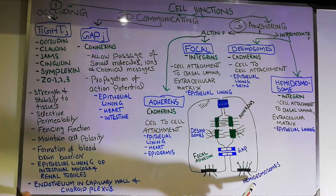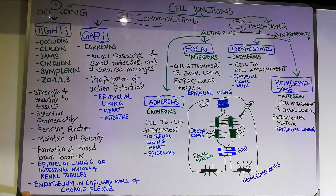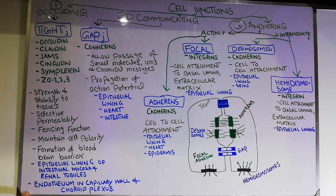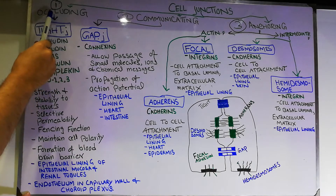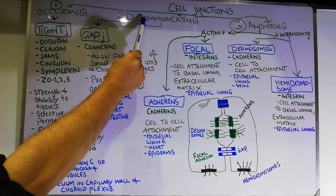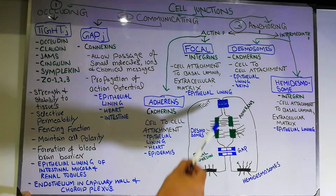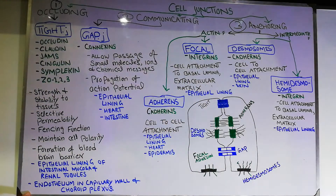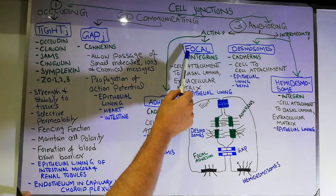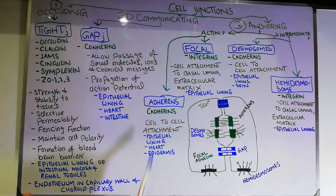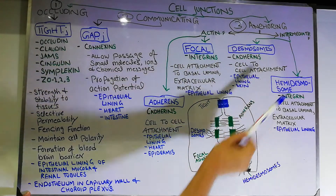While the focal adhesions and the hemidesmosomes are basically the connection between a cell and the extracellular material. There are three main types of cell junctions: occluding junctions, communicating junctions, and anchoring junctions. Anchoring junctions are further divided into actin filament junctions and intermediate filament junctions. Actin filament junctions are further divided into adherence junctions and focal junctions, while intermediate filament junctions are divided into desmosomes and hemidesmosomes.